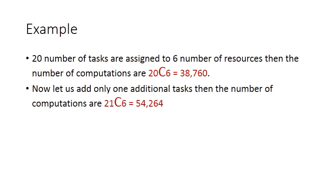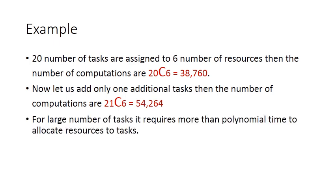See the difference between these two values. Given we add only one single task, the result becomes very huge — the number of computations required grows dramatically. So, for a large number of tasks, it requires more than polynomial time to allocate resources to tasks.